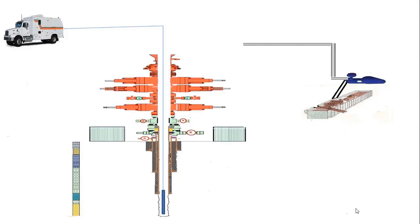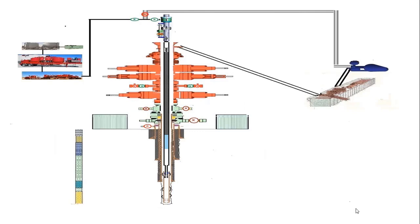After cement job, how tubing head spool is installed and its cavity is pressure tested. Production zone drilling and evaluating prospective zone with wireline logs. Running production liner and its cement job procedure is also discussed.